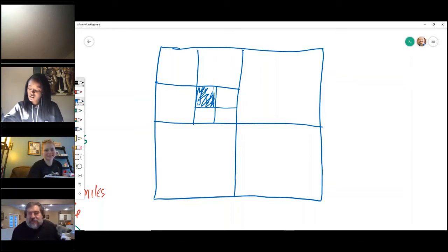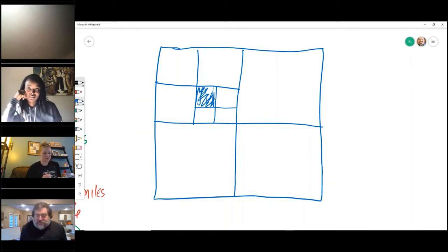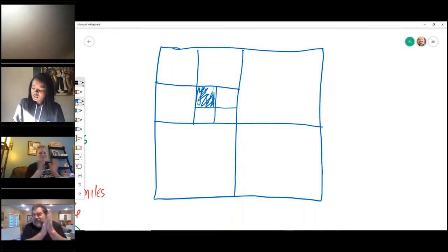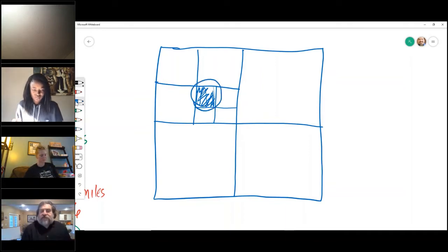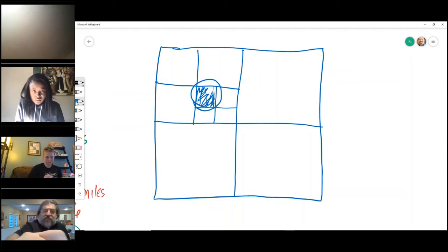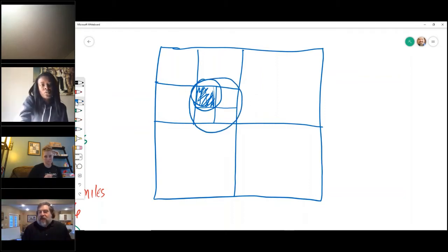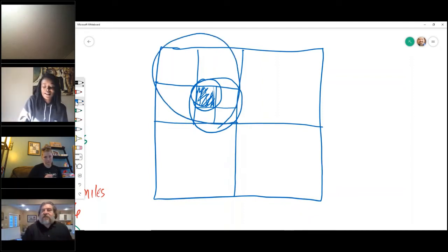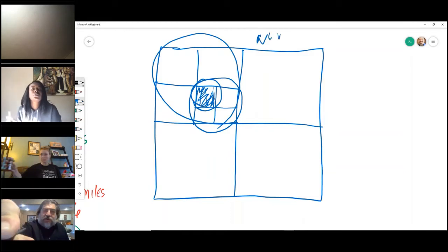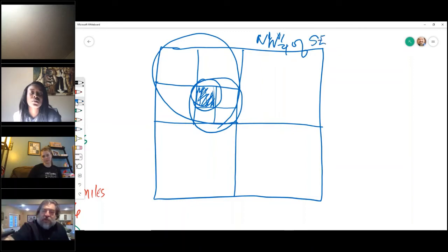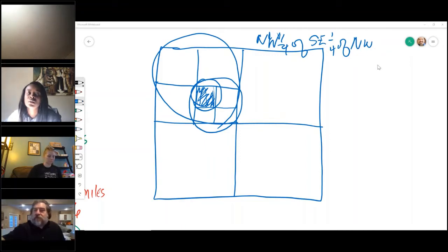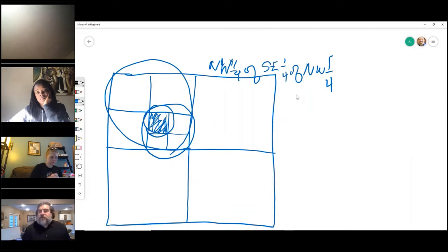Sarah, what'd you end up with? I have northwest quadrant of the southeast quadrant of the northwest quadrant of section 27. Very good, the northwest quadrant of the southeast quadrant of the northwest quadrant.